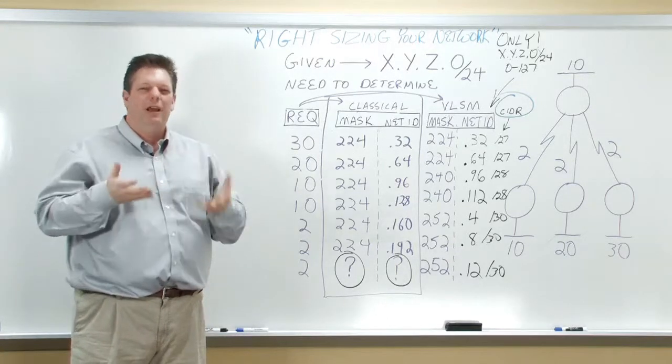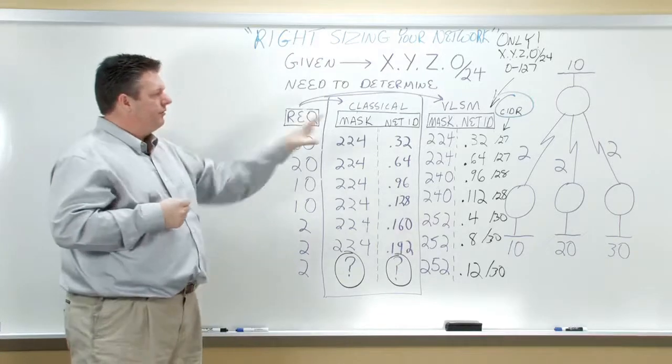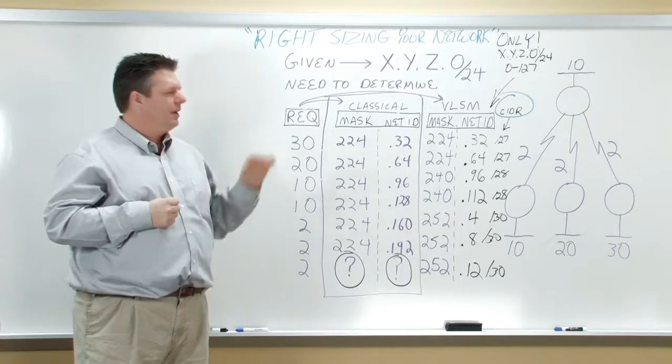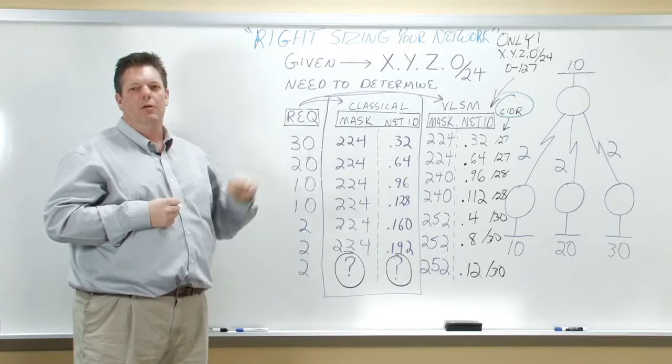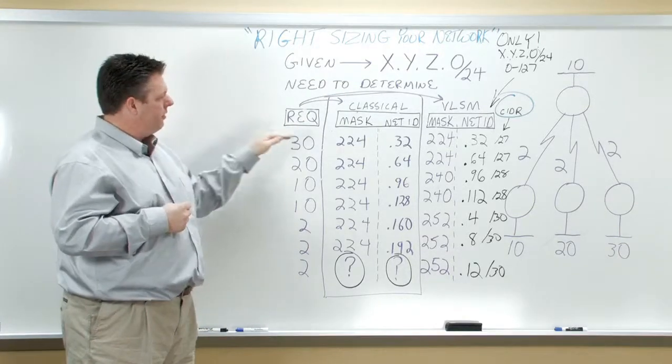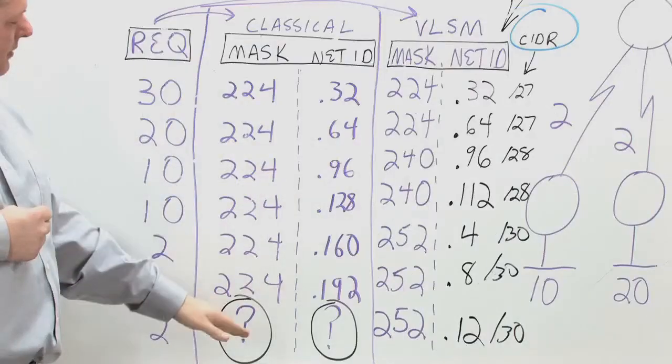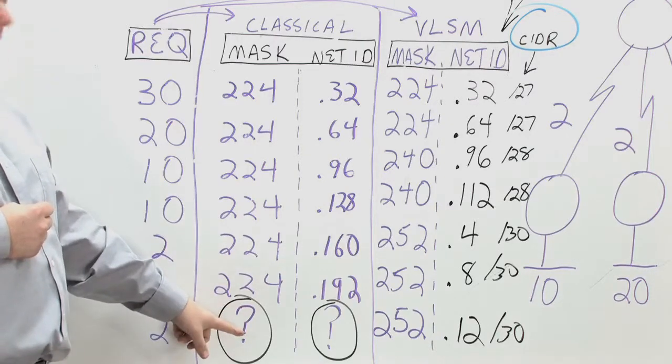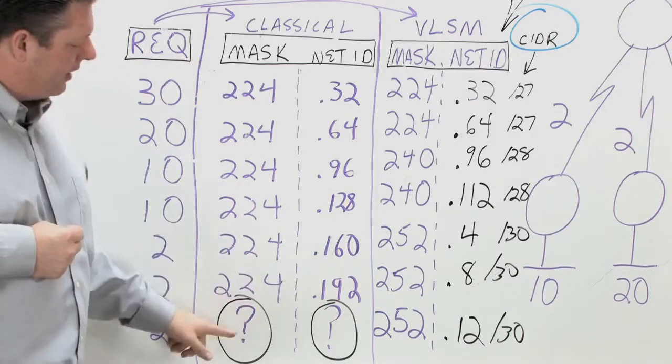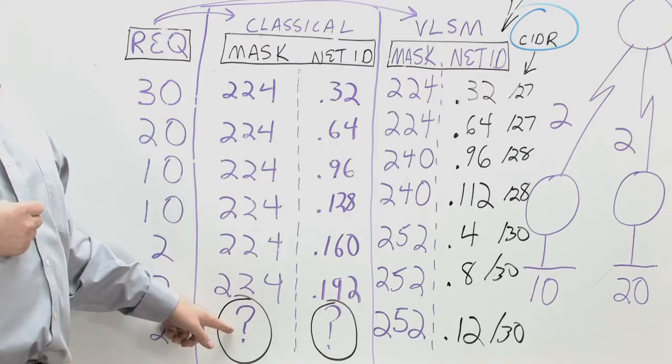right-sizing your network is the way we work in today's world. So let's take a look at what we did aside from classical. An observation that we have is that within classical, we ran out of space. We didn't have enough addresses to allocate.